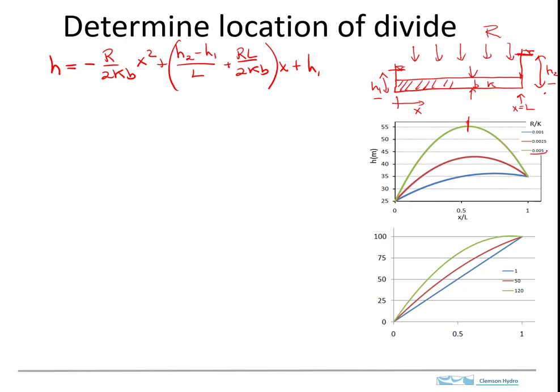If we change R over K, we see that the location of the divide changes. What I want to do is analyze what this distance to the divide is, I'm going to call that X sub D, and I want to see what kind of properties of the analysis control the location of the divide.